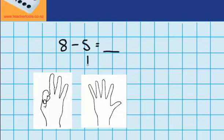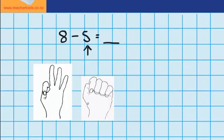Now the question says I need to take away 5. Can you see an easy way that we could take away 5? That's right, we could just close this hand. So it will look like this. So now it's easy to see that 8 minus 5 equals 3.